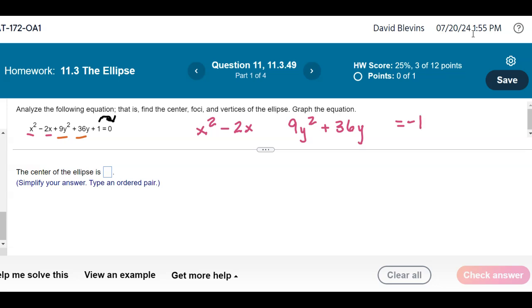The x part's ready to go. I divide the negative 2x by 2, I get negative 1, and then I square that, so negative 1 squared is positive 1. That's what I need to add to complete that square.